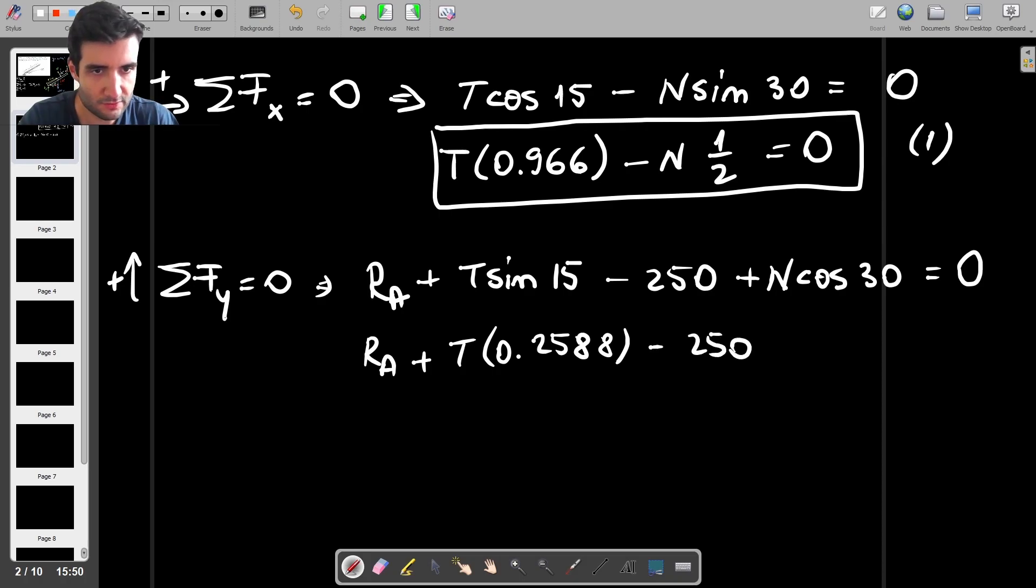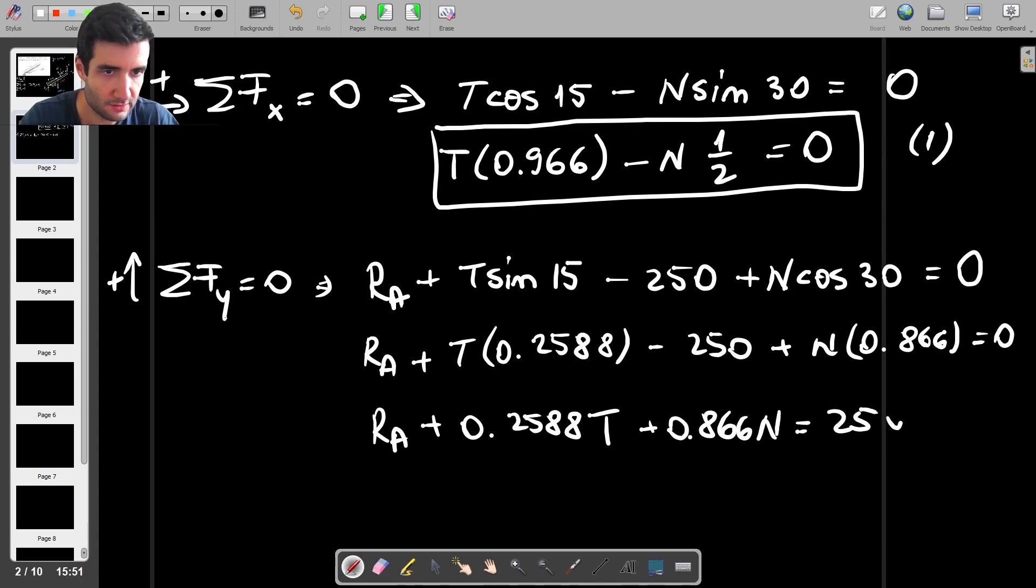So we've got RA, we've got plus T sine of 15 degrees, so I'll just write that down, and that's going to be approximately 0.2588, minus 250, plus N, and cosine of 30 is going to be square root of 3 over 2 or approximately 0.866. So I can rewrite that as RA plus 0.2588T plus 0.866N equals 250. So that's the second equation.